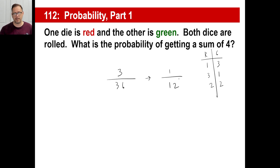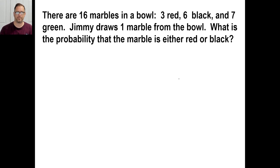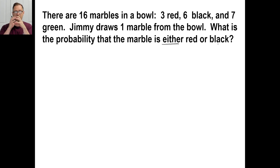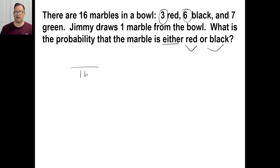So your probability of rolling a four with two dice is one out of 12 — about 8%. Let's try the practice problems on page 348. There were 16 marbles in a bowl: three red, six black, and seven green. Jimmy draws a marble from the bowl. What is the probability that the marble is either red or black? There are 16 marbles total — that's the bottom of the fraction. Three red plus six black is nine, so the probability is nine sixteenths.